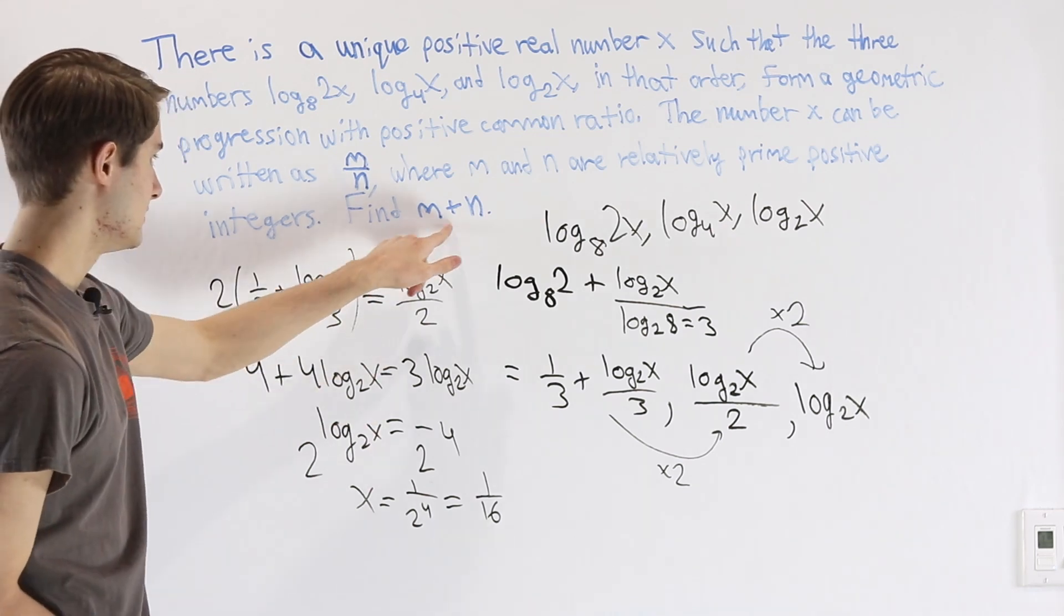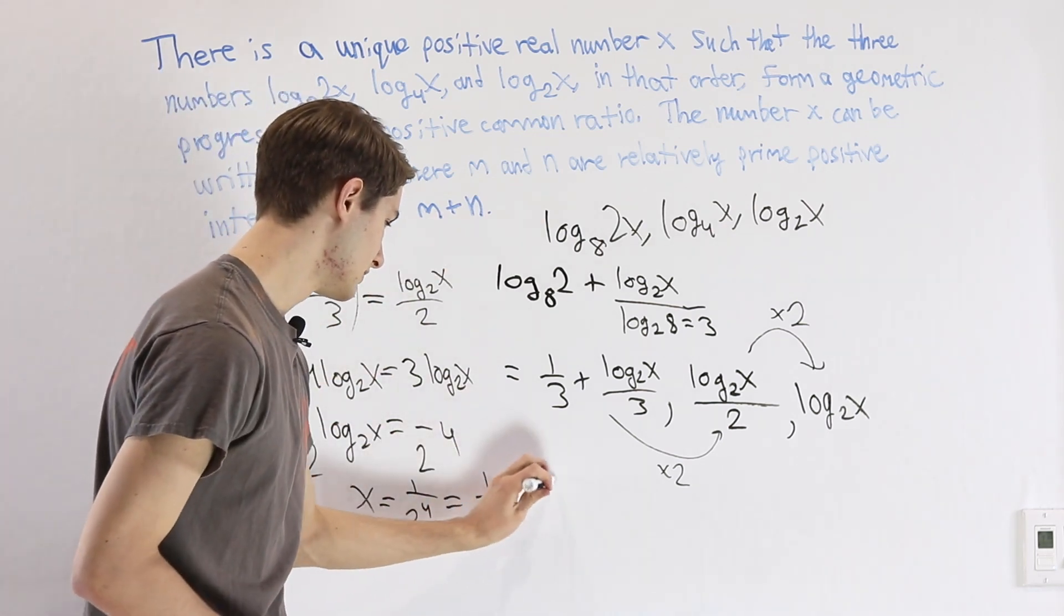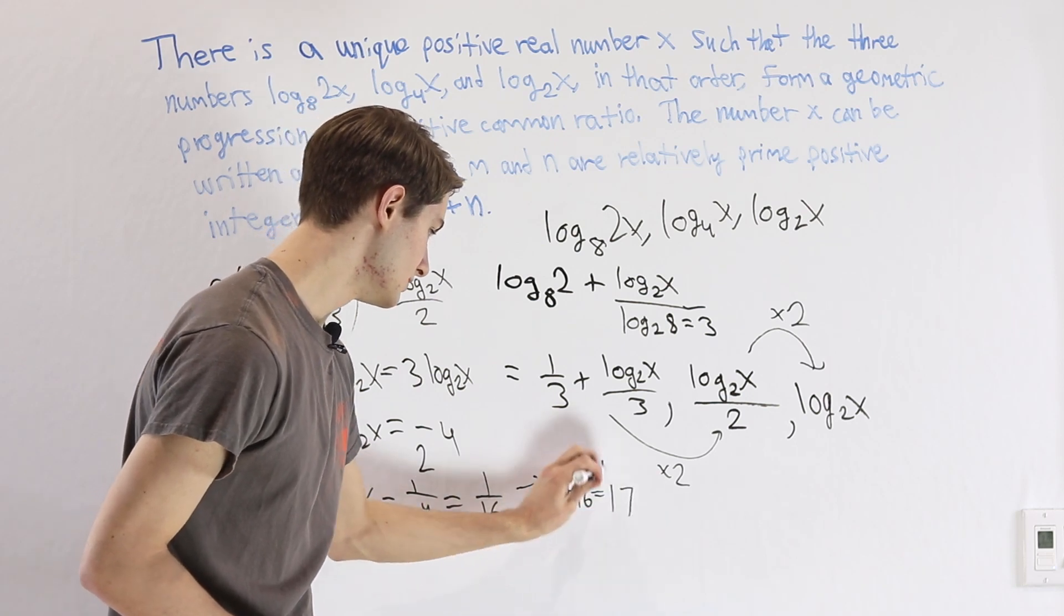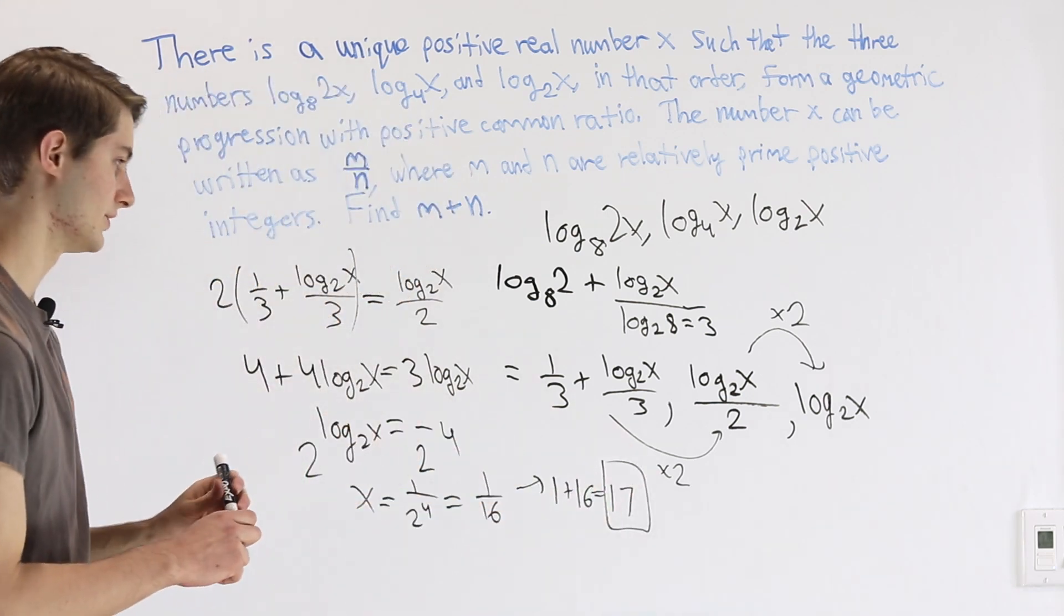All we have to do now is find m plus n. So we have 1 plus 16, which is equal to 17. And that's our final solution.